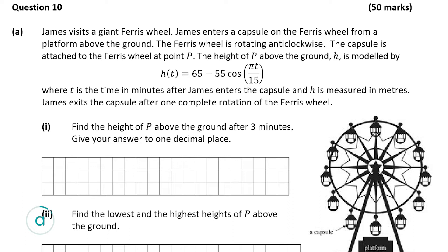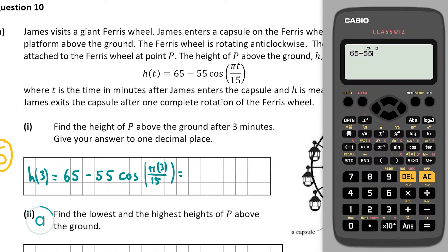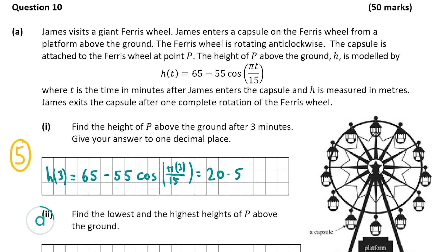James exits the capsule after one complete rotation. Part A1 is worth 5 marks and asks us to work out the height of P above the ground after 3 minutes, so when T = 3. We calculate H(3) = 65 minus 55 cos(π×3/15). Using the calculator, that gives 20.50406531, which correct to one decimal place is 20.5 meters.